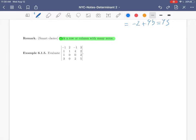So let's continue talking about determinants. If you remember last time, we discussed the definition of the determinant of a square matrix. And we had a nice remark, which states that the smart choice, which leads to less computation when you want to calculate the determinant, is to pick a row or column with many zeros.